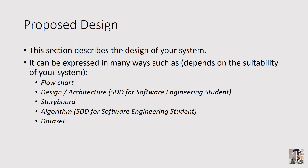The most basic is a flowchart. Some systems require architecture, further detailed down in the algorithm. Graphic students may use storyboard, and some may describe the dataset they use. For software engineering students, they have extra documents to write: the Software Requirement Specification and Software Design Description document. Today in this colloquium, I'm going to cover two basic ways of describing the proposed design.